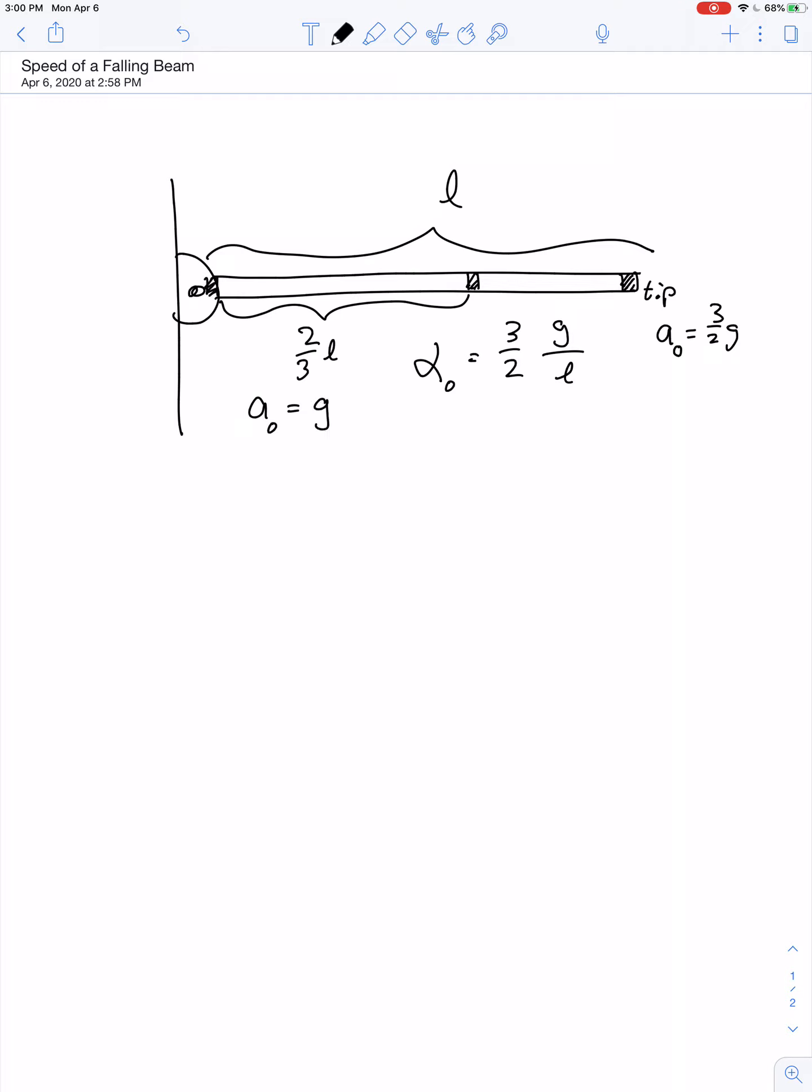The point of the beam adjacent to the axis has an initial acceleration equal to 0. So all points of the beam share a common angular acceleration, but every point of the beam has a different value of tangential acceleration.